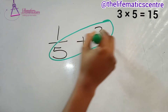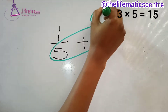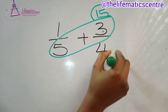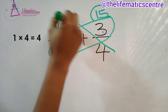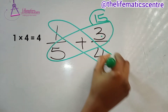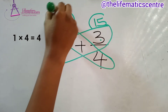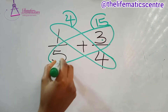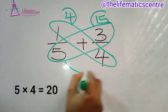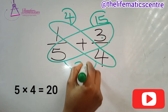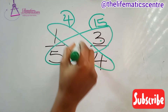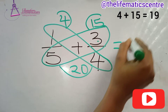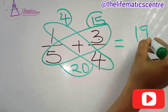3 times 5 is 15, and 1 times 4 is 4. Now let's multiply the denominators: 5 times 4 is 20. Let's add them up — 4 plus 15 is 19, all over 20.